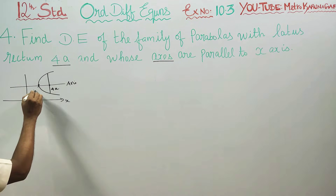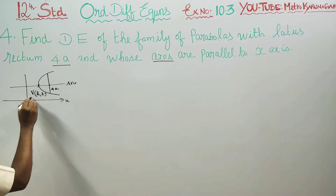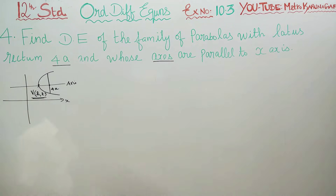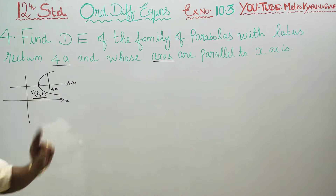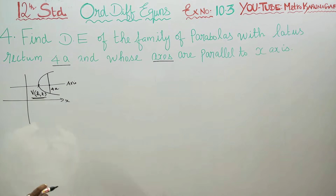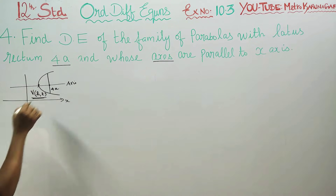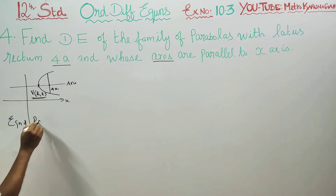So we need to identify the arbitrary constants. The vertex position gives us two constants h and k. A is not an arbitrary constant — A is fixed. This is the parabola equation.